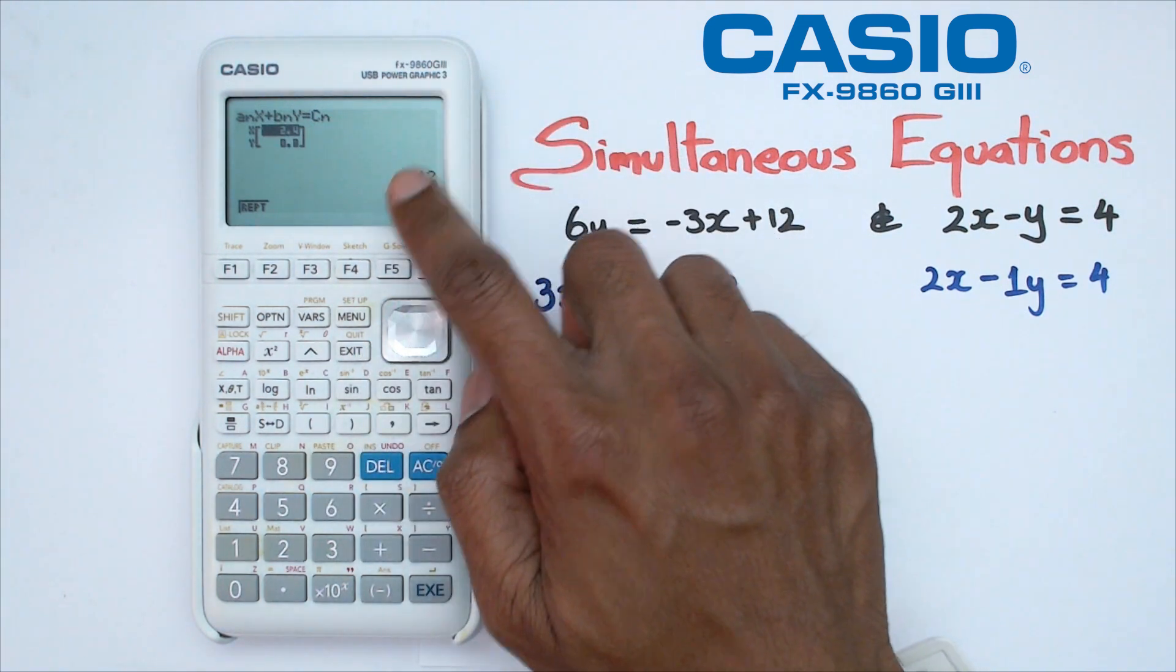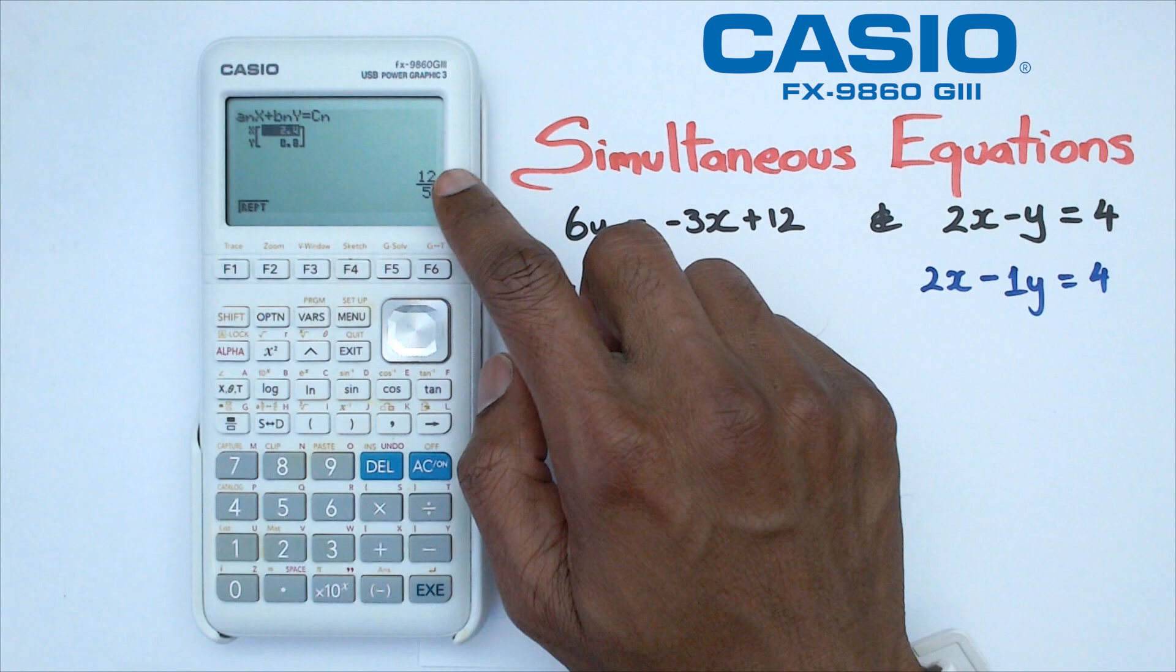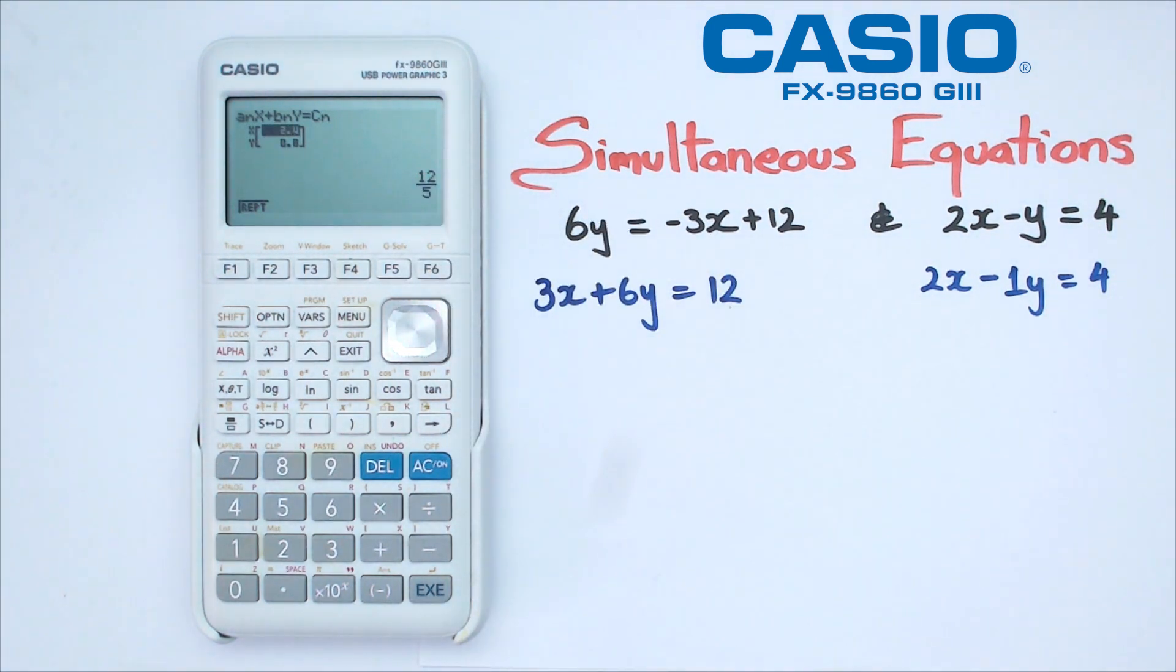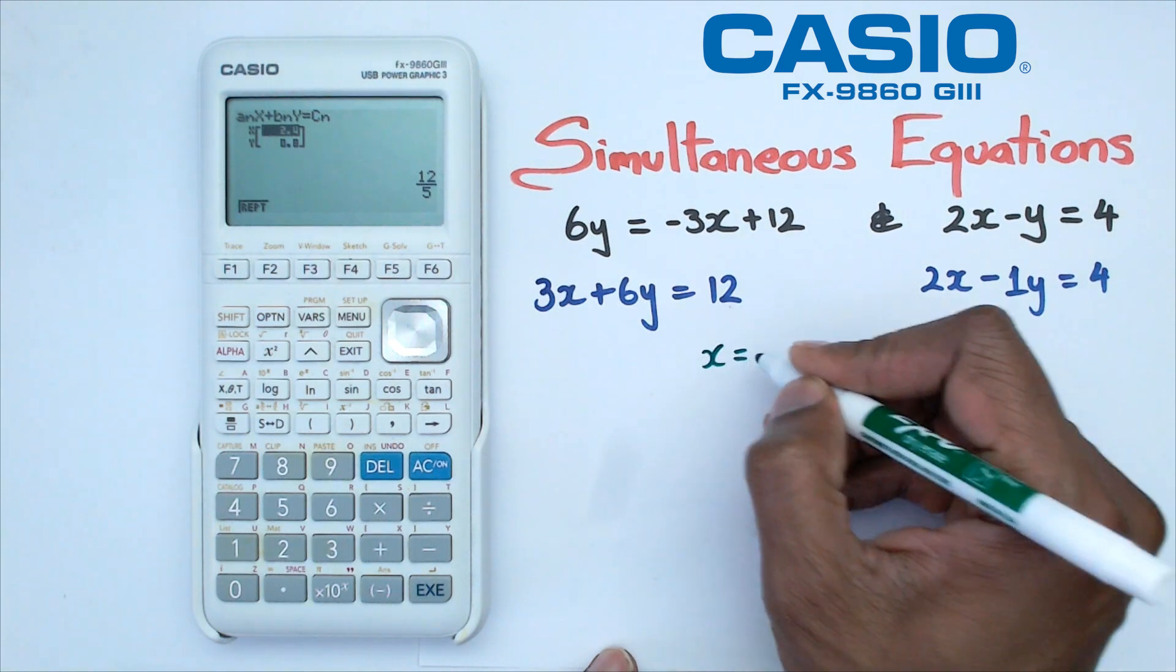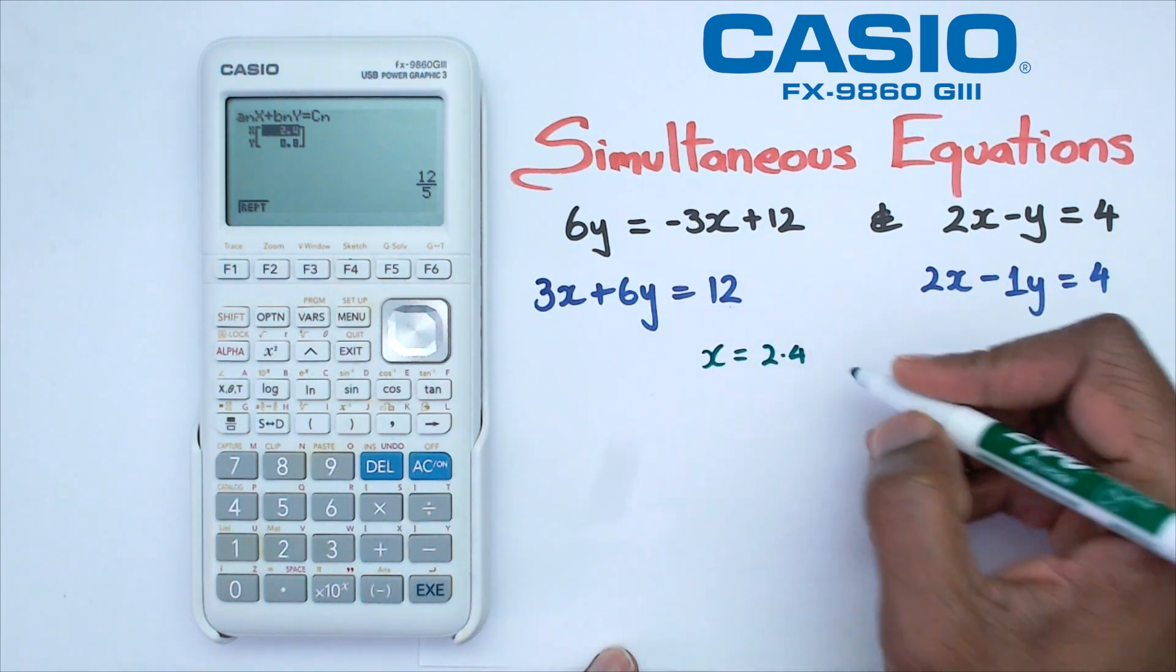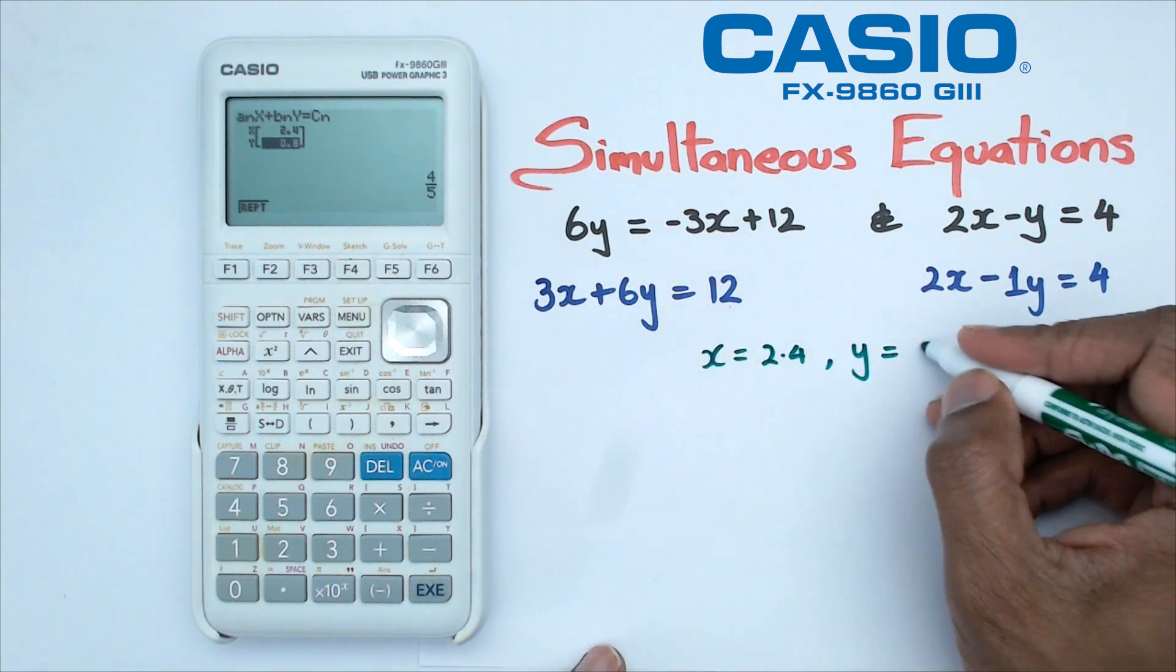So you will be given the fraction equivalent of that particular answer somewhere here. So in this case, we can actually say that X is equal to 2.4. And then we also can say that Y is equal to 0.8.